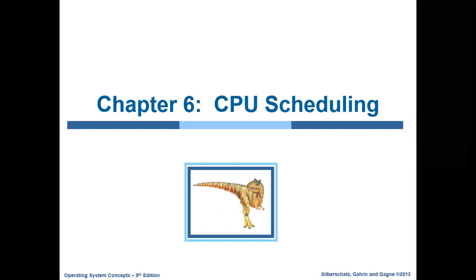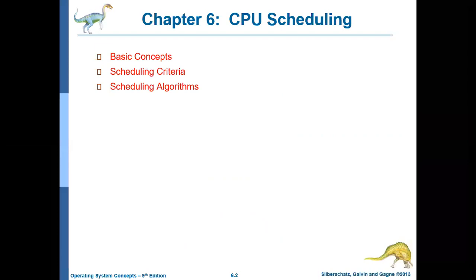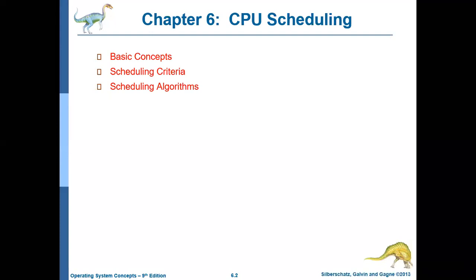Welcome. The topic we will be discussing in this session is CPU Scheduling. The objectives we will discuss in this lecture series include the basic concepts of CPU Scheduling, why we should go for Scheduling, and then Scheduling Criteria. There are different CPU Scheduling algorithms available, and we will discuss under which circumstances which algorithm should be used, and how to measure the performance of these algorithms based on what criteria.